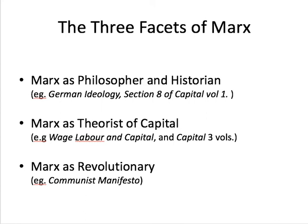These facets are not perfectly divided. You could argue that a lot of what Marx says in Capital is Marx the historian, not just the theorist of capital. And a lot of what he says in the Communist Manifesto — even though it represents the revolutionary Marx — reflects ideas from all three facets. There is overlap. But to simplify, when we think of Marx the philosopher and historian among his key works, you really see it in the German Ideology and in Section 8 of Capital Volume 1.